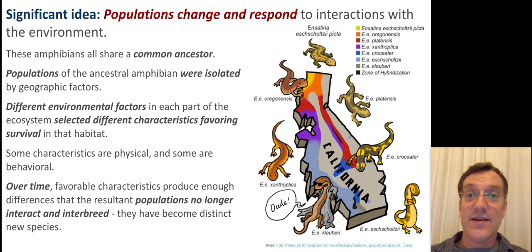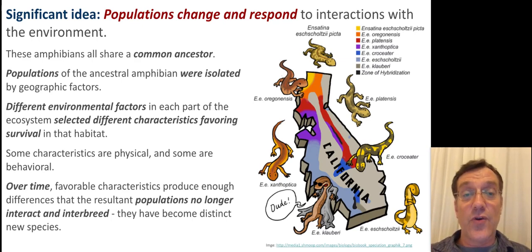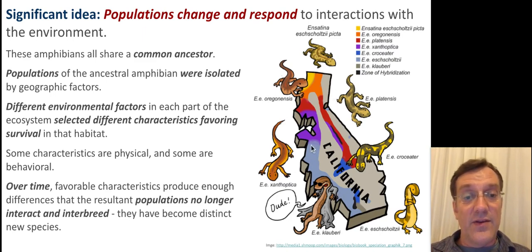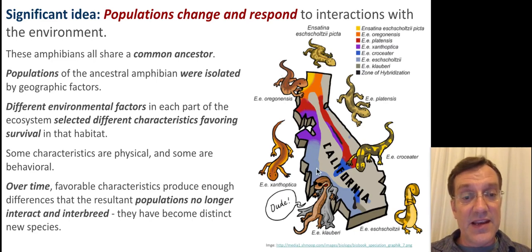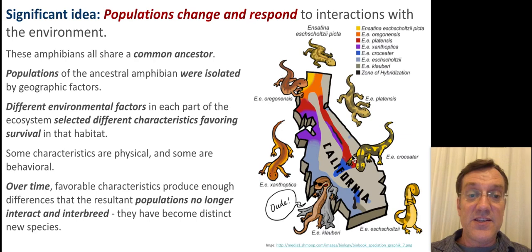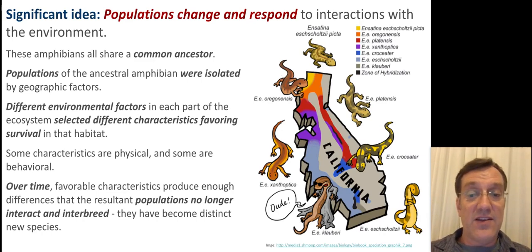The second big idea in ecology and ecosystems is that populations change and respond to their interactions with the environment. In this simple map of California, you can see a bunch of different amphibian or salamander species. At some point they were a single population, and they have been physically isolated over many millions of years. Because the environment in one coastal mountain range may be different from the environment in another, separated by the barrier of the central valley, these species have evolved or changed in response to the unique set of living and non-living factors where they are found.